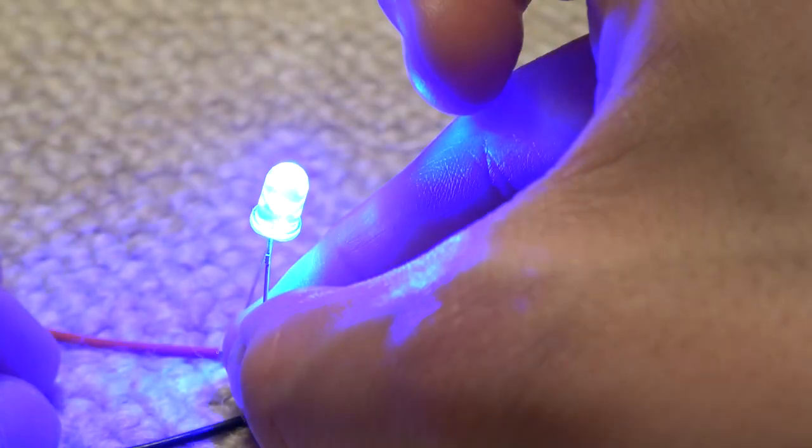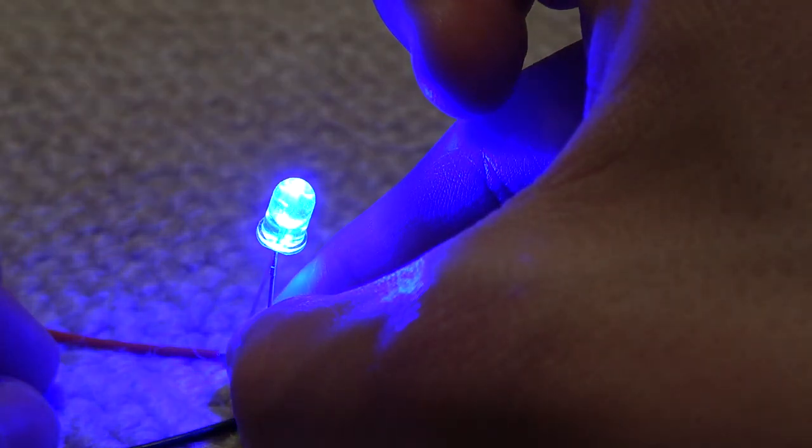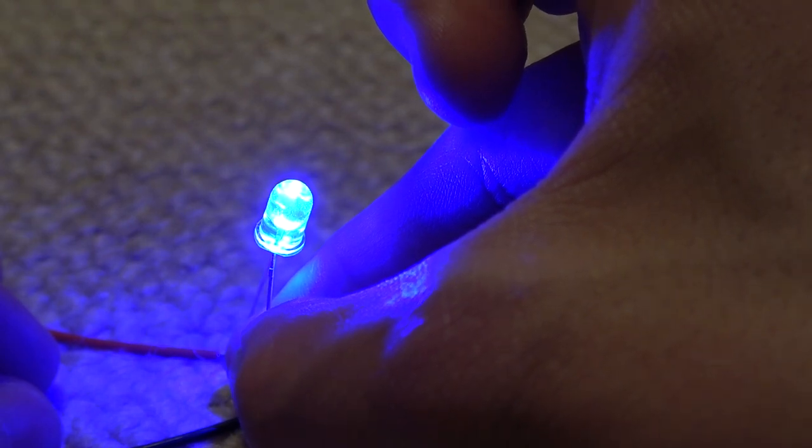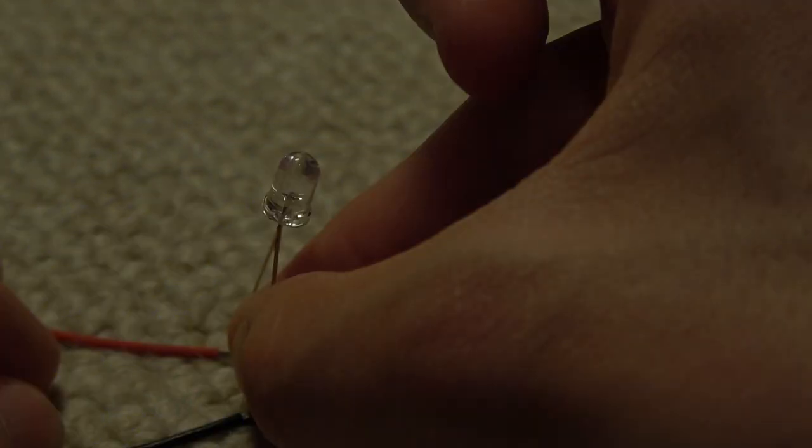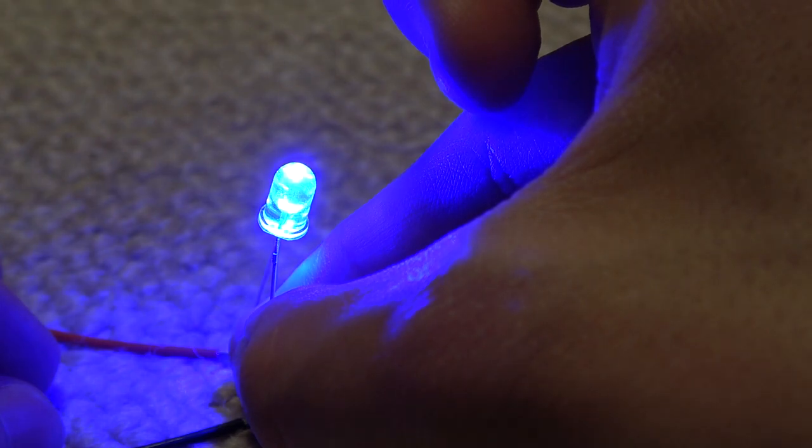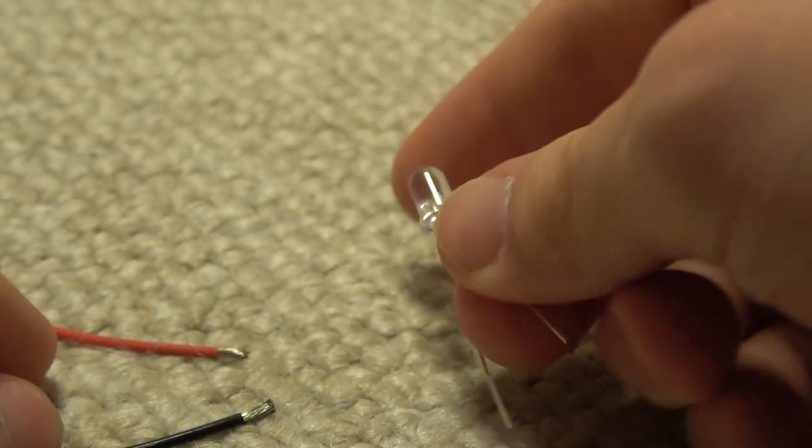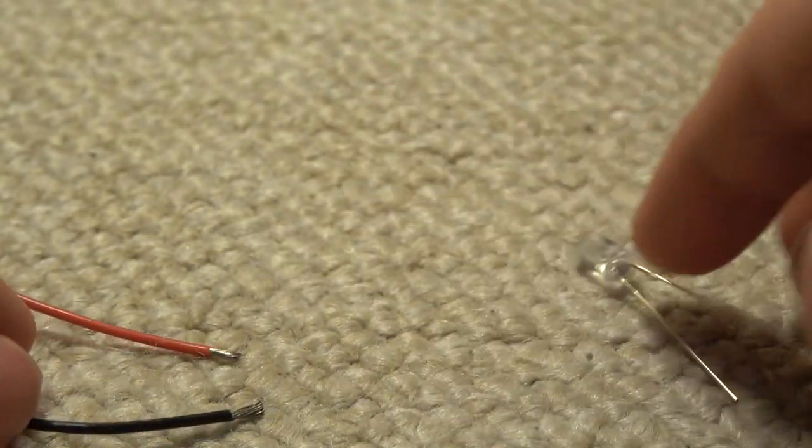So we're going to test it out. Watch this. It lights up. Look at that. Tap it. It lights up. Just a little test. Light it up blue for autism awareness. See, look at that. It lights up. Pretty cool, isn't it? So it works. Perfect. Let's get started on the wiring.